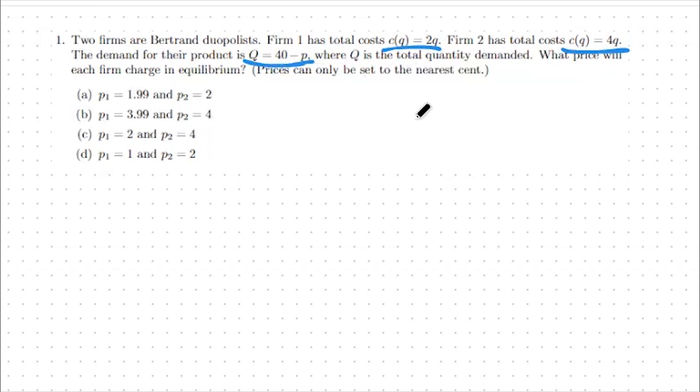To do our Bertrand duopolist formula, we can look at the marginal cost of firm 1, which would be the derivative with respect to q for firm 1, which is 2, and compare it to the marginal cost for firm 2, which will be 4.